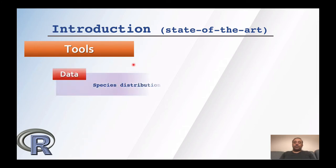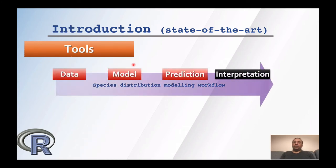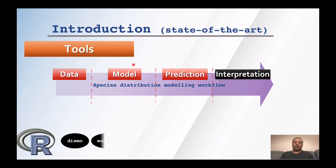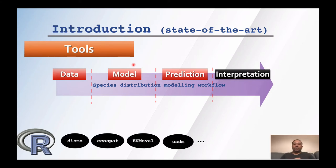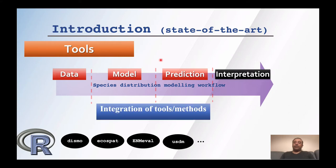On the other hand, species distribution modeling is a workflow: it starts with data, the data is used to fit the model, the model is used to predict the distribution, and there is also interpretation. All of these major components use different tools and methods. Some packages developed in R provide functionality for part of this workflow, but these different tools do not follow the same standards. To handle this workflow more efficiently, we need integration of the methods into a unified framework.